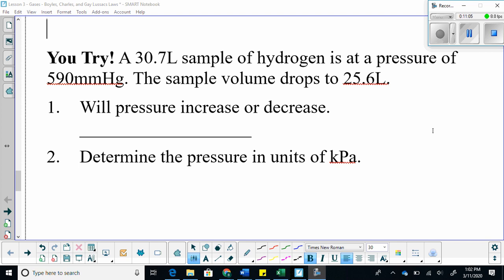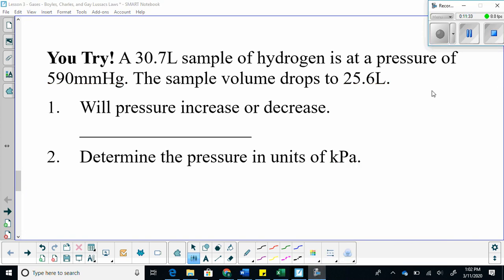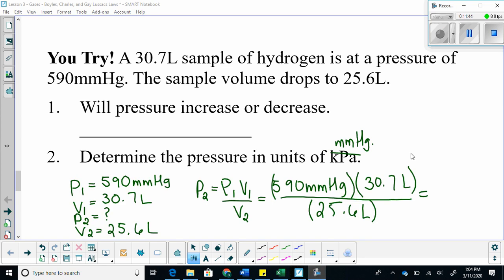I want everybody to try this one on your own. A 30.7 liter sample of hydrogen is at a pressure of 590 millimeters of mercury. The sample volume drops to 25.6. Will the pressure increase or decrease? I want your pressure to be in millimeters of mercury, not kilopascals. I'm going to just walk through this, and then I'll give you a couple minutes to finish this up.